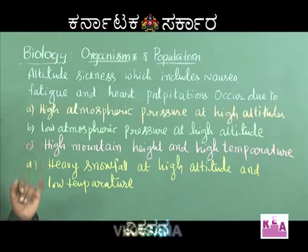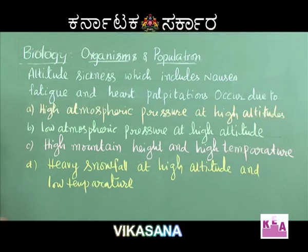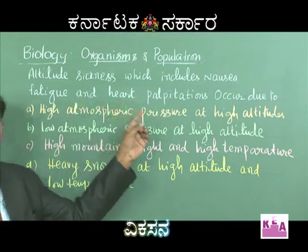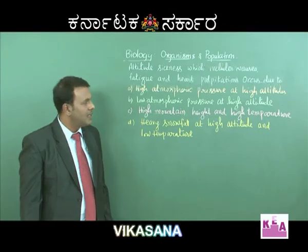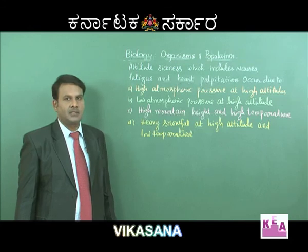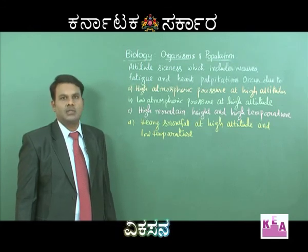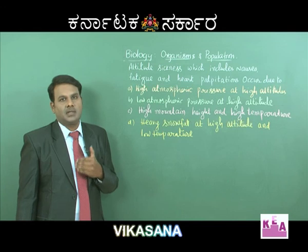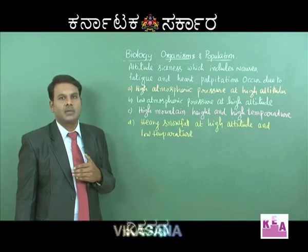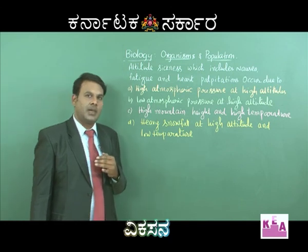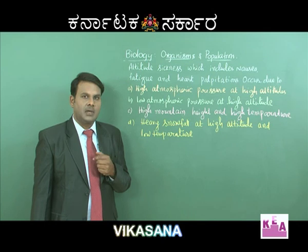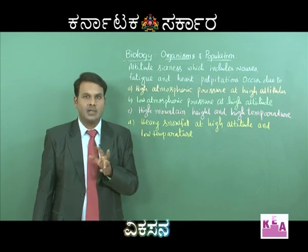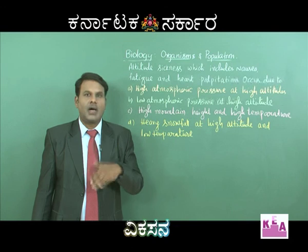At higher altitudes, we experience symptoms like nausea, fatigue, heart palpitations, fainting, and sweating due to low oxygen density. To compensate, our physiological functions increase RBC count, decrease the oxygen-binding ability of hemoglobin, and increase breathing rate. That is why people living in hilly areas and higher altitudes have a high RBC count.